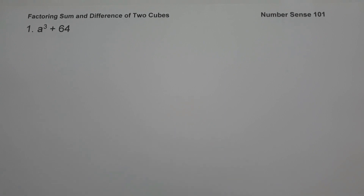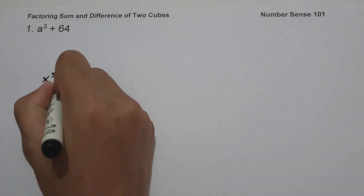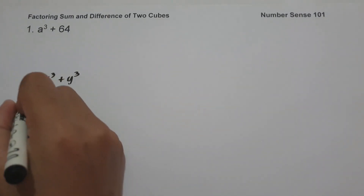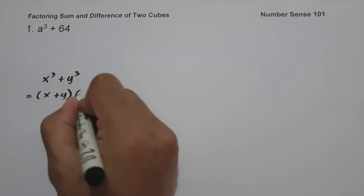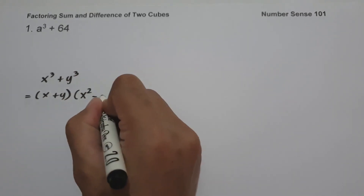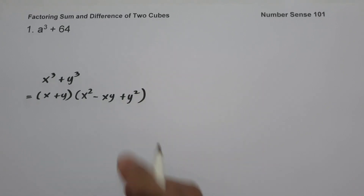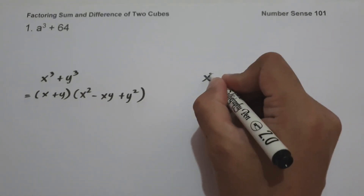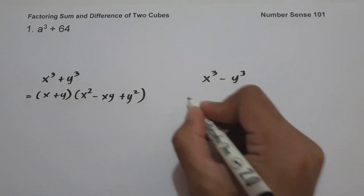The first one is the sum of two cubes, written in the form of x³ + y³. The factored form of x³ + y³ is (x + y) times the quantity x² − xy + y².